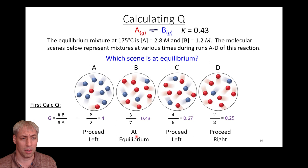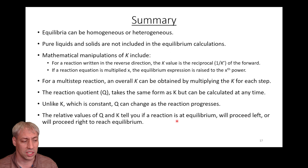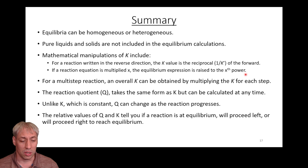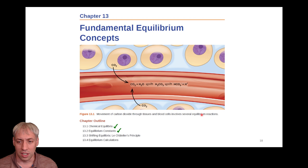That closes out this section. We talked about equilibria — they can be heterogeneous or homogeneous. We don't include solids and liquids in the equilibrium calculation. We can do mathematical manipulations of K: 1 over K is the reverse reaction, you can multiply Ks together, and you can raise K to a power to change the stoichiometry. We also talked about Q — something we can calculate anytime — and how the relationship between Q and K dictates which way the reaction will proceed or if it's already at equilibrium. In 13.3, we'll dive into Le Chatelier's principle and the idea of perturbing equilibrium.